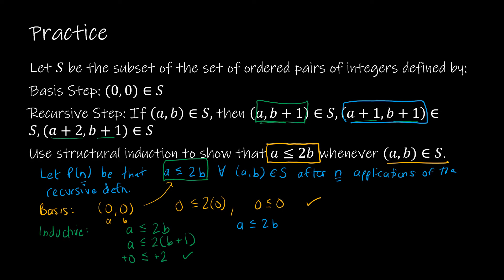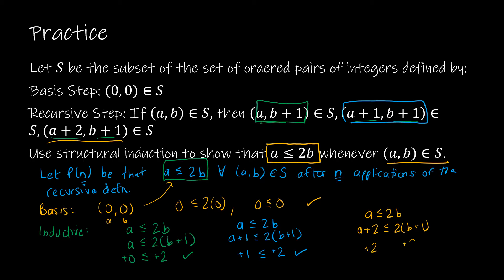For the second case, adding one to a and one to b: we start with a ≤ 2b, add one to a and one to b, but by the distributive property we've added one to the left side and two to the right side, so the relationship holds. For the third case, adding two to a and one to b: by distributive property we've added two to each side, and two is certainly less than or equal to two, so the relationship still holds.